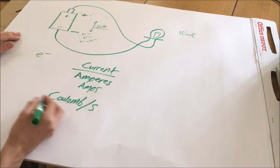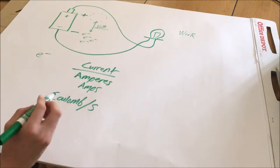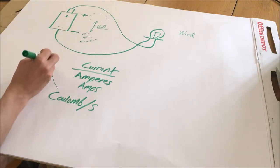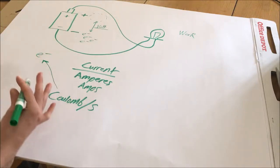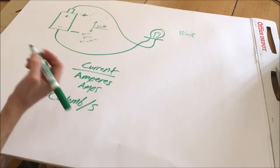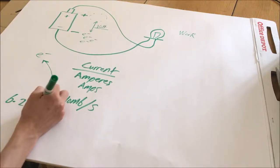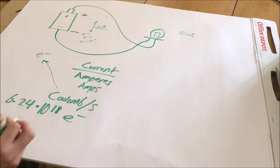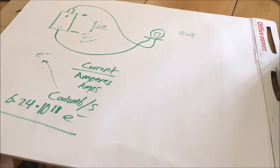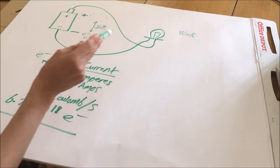An amp means that one coulomb of charge is flowing through the circuit every second. A coulomb of charge is the amount of charge carried by a massive number of electrons — to be approximate, it is about 6.24 times 10 to the 18 electrons. That means a lot of electrons are going through the circuit every second to create a current flow of one amp.